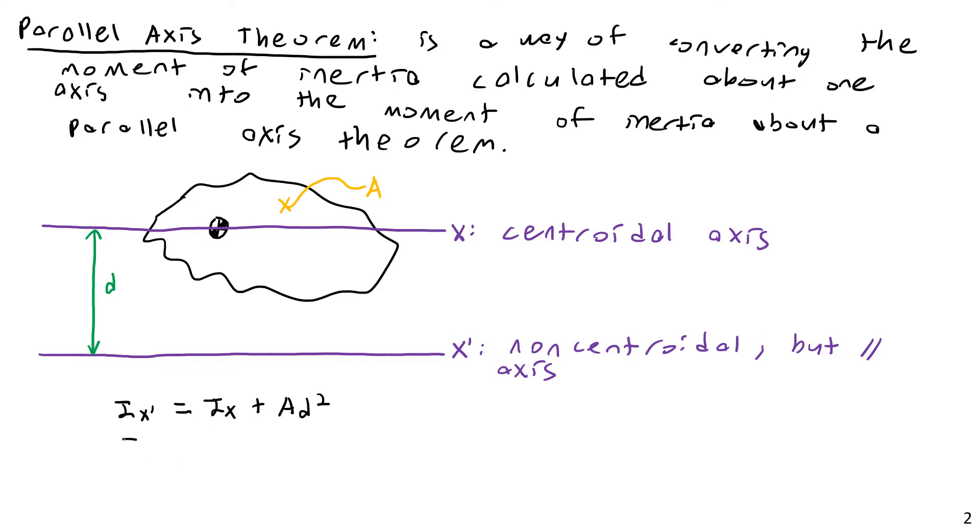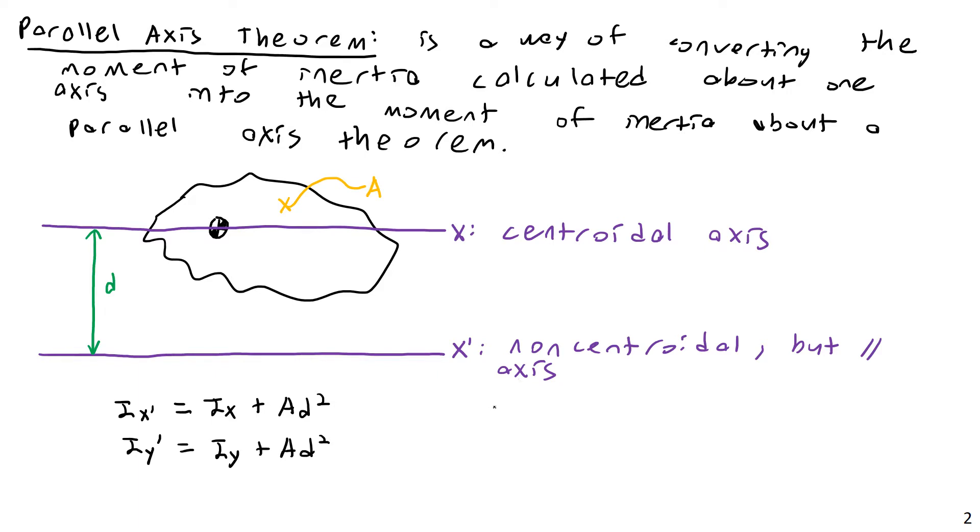And I suppose I could write a version of this for Iy as well. Iy prime equals Iy plus A d squared, but you'd have a different distance in the Y. I could put a dx and a dy, well I'll just say d right now, just the difference between whatever those axes are. But what I wanted to mention is back to the idea of adding things.